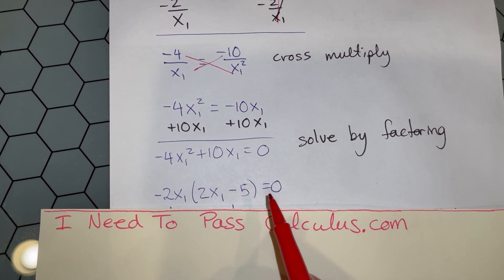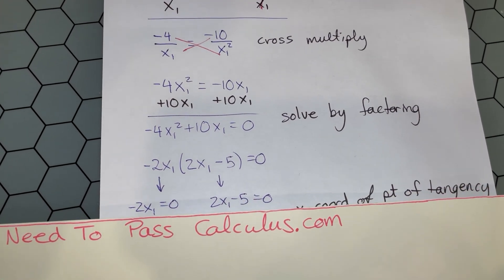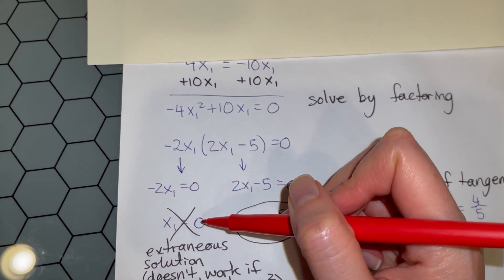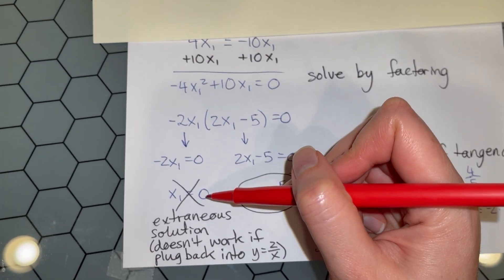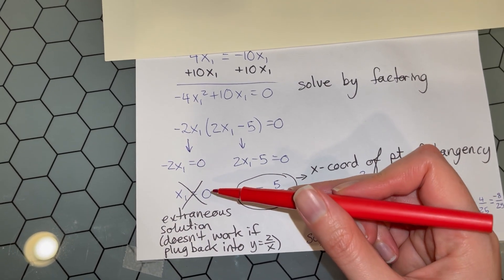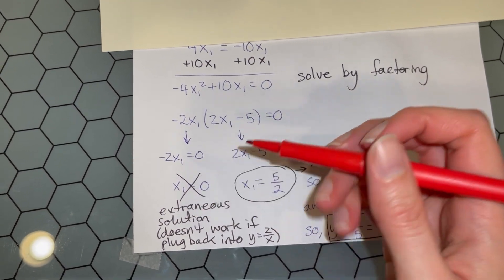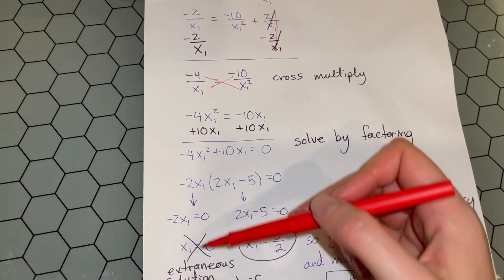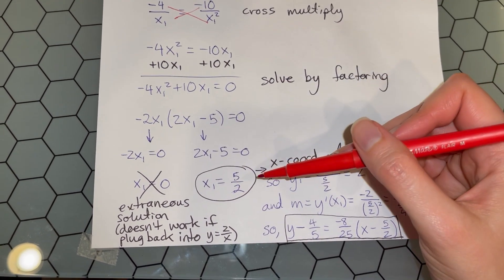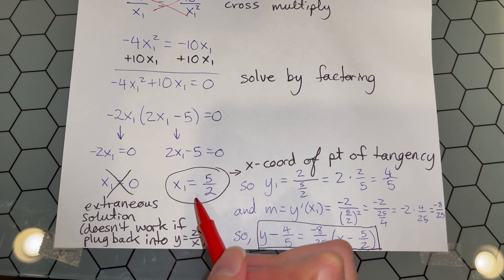They share -2 and a factor of x₁. Pulling that out: -2x₁(2x₁ - 5) = 0. Solving by factoring gives two miniature problems. The first factor gives x₁ = 0. However, plugging 0 into the original curve 2/x is undefined, so this is an extraneous solution from the algebraic process. But the second factor gives x₁ = 5/2, which is defined in our original function. So we have a concrete x-coordinate where the tangent line is built.